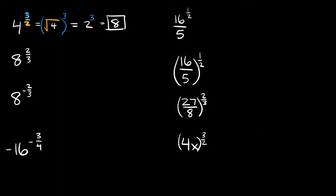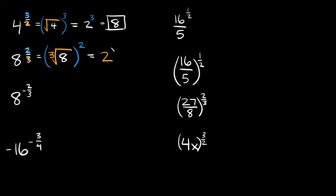Here we have 8 raised to the two-thirds power. Since there's a 3 in the denominator, we take the cube root of 8, then raise it to the second power. The cube root of 8 is 2, and 2 squared is 4. So 8^(2/3) = 4.